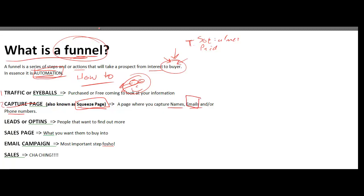There is no other option — you have to capture that information. In order to move to step three, which is leads and opt-ins, they have to go to your squeeze page and enter some type of information. Just entering a name won't get information to their screen, so email capture is key. A lot of people don't give names or phone numbers. Phone numbers are good for SMS marketing, but I mostly just capture emails.